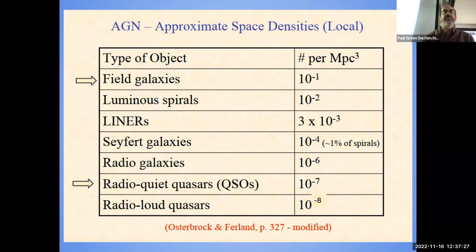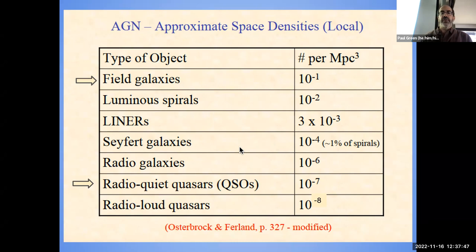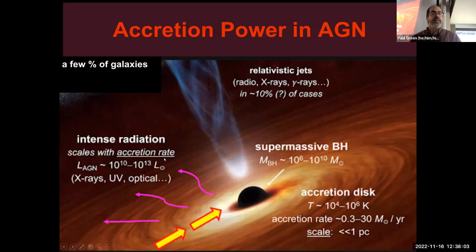If you look at the space density of field galaxies, maybe one in a hundred thousand or one in a million is a quasar, and maybe one in a hundred or one in a thousand is a lower-luminosity version of a quasar called a Seyfert. Seyferts and quasars are just different luminosity categories of active galactic nuclei, powered by accretion onto a supermassive black hole.